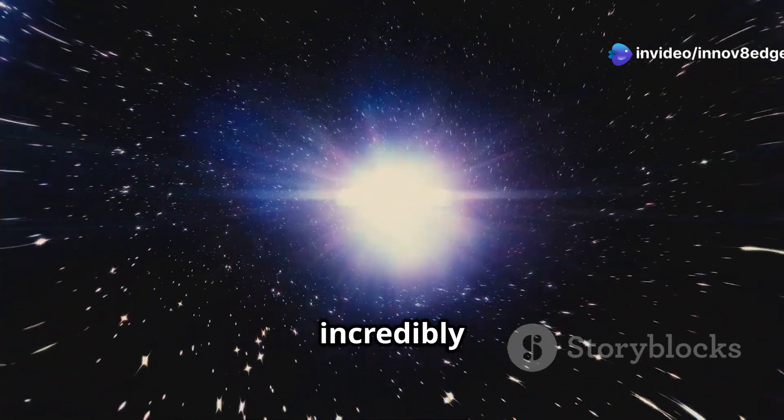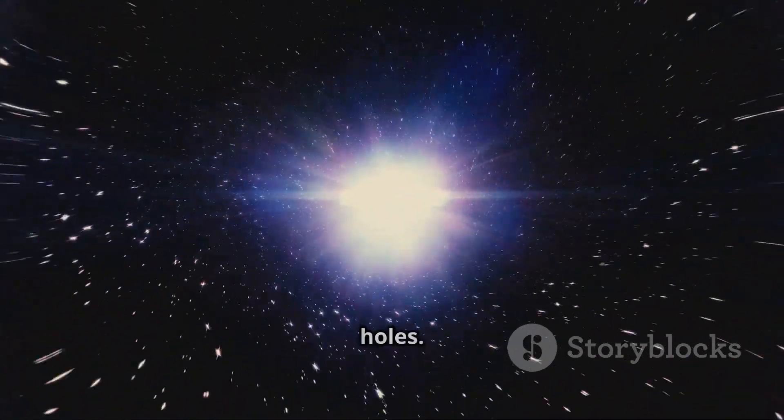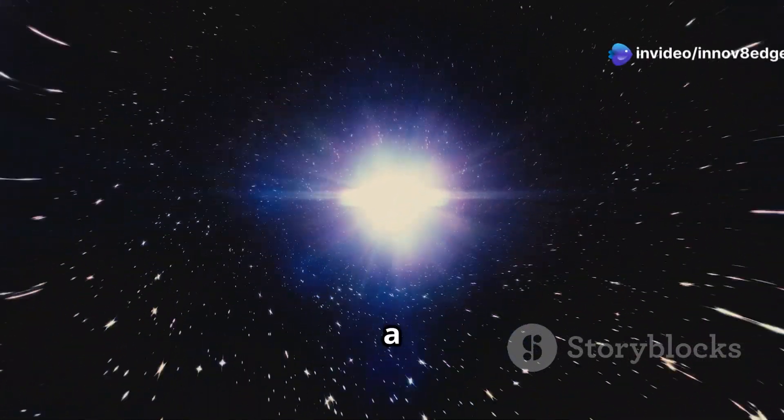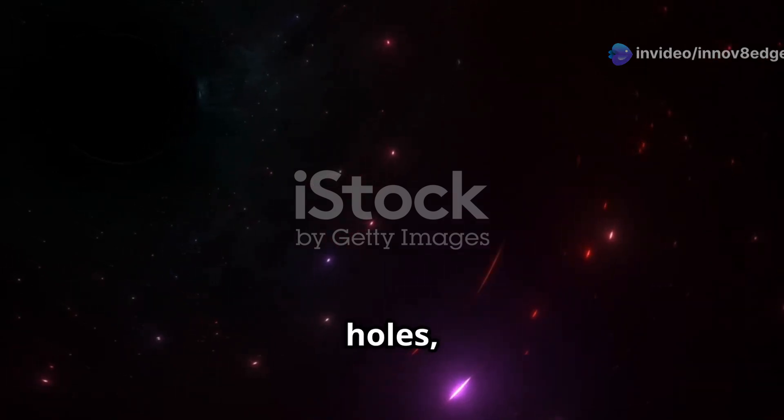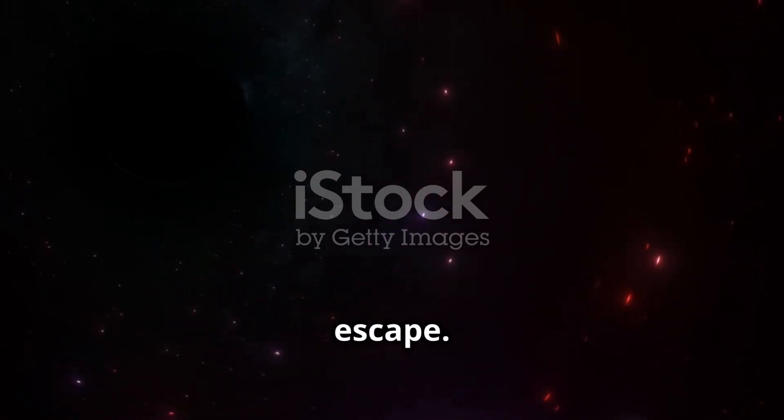This theory has been incredibly successful, predicting phenomena like gravitational lensing and black holes. Gravitational lensing occurs when light from a distant object is bent around a massive object like a galaxy or a black hole, creating a distorted or magnified image. Black holes, on the other hand, are regions of space-time where the curvature becomes so extreme that not even light can escape.